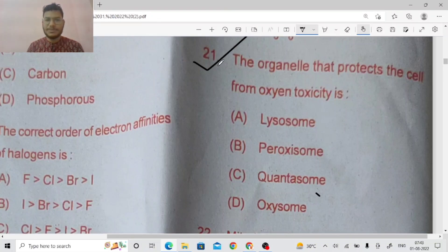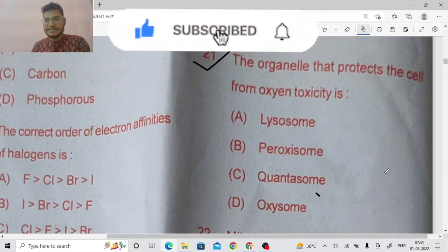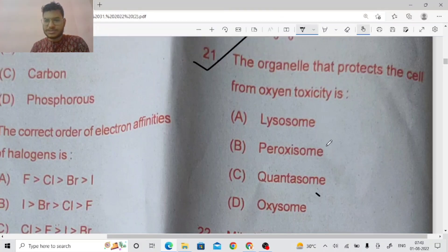So friends, question number 21. The organelle that protects the cell from oxygen toxicity. So the right answer here that protects the cell is peroxisome. So right answer is B.